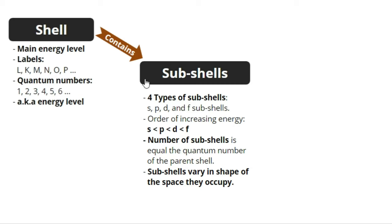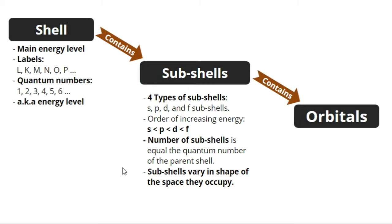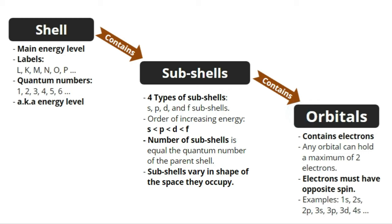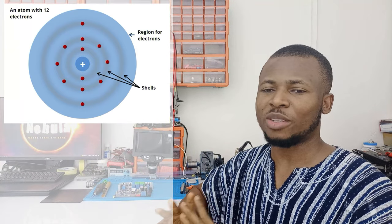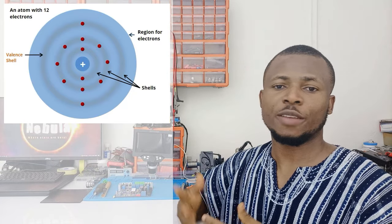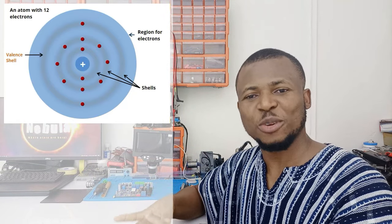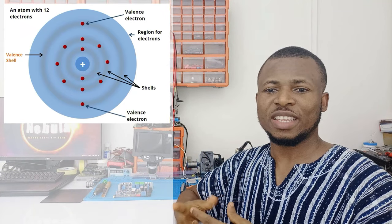Within the subshells, electrons can be grouped into orbitals. Inside a shell is a subshell, and inside a subshell is an orbital. Each orbital can hold up to two electrons, but they must have opposite spins — one pointing up and the other pointing down. This is what is known as the Pauli exclusion principle. Details of orbitals are in the subject of chemistry and not of much interest to us. In electronics, we are only concerned about the outermost shell. The outermost shell is also called the valence shell, and the electrons in the outermost shell are called valence electrons.